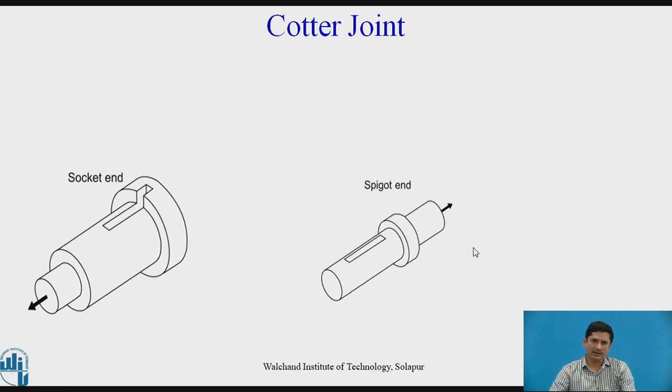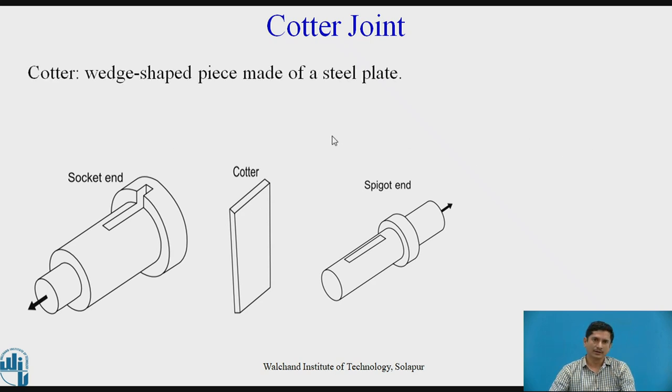It has one socket end and another is the spigot end. We can see that there is a slot on the socket end and the spigot end. A cotter is used. Spigot is put in the socket and from the top, the cotter is inserted and hammered. This cotter is a wedge-shaped piece made up of steel plate. It provides a wedge action. Cotter is tapered - its one side is tapered, another side is straight. It causes wedging action in the slot and provides a fitting force.